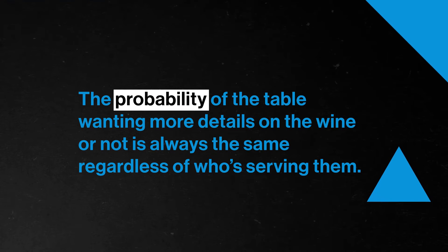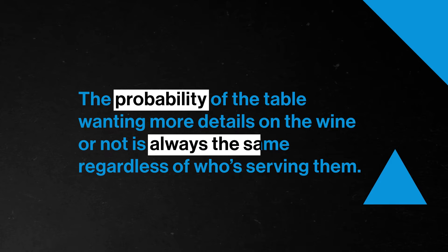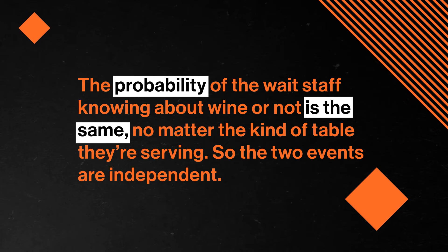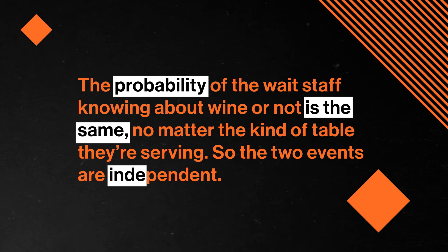So we know how likely either of those events are to happen separately, but we want the probability of both of those things happening. The key thing is, in Angela's restaurant, there is no connection between the customers and the staff member who waits on them. The probability of the table wanting more details on the wine is always the same regardless of who is serving them, and likewise the probability of the wait staff knowing about wine is the same no matter the kind of table they are serving. So the two events are independent. In this case, we can use the fundamental counting principle to find the probability of both events happening.